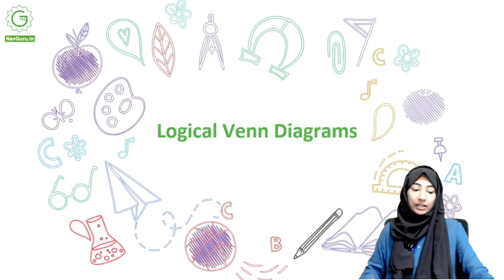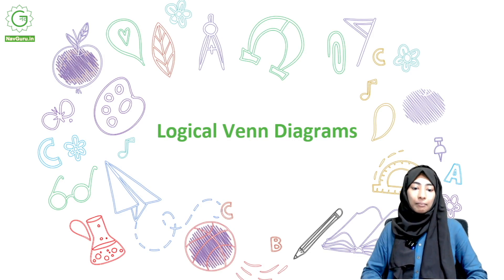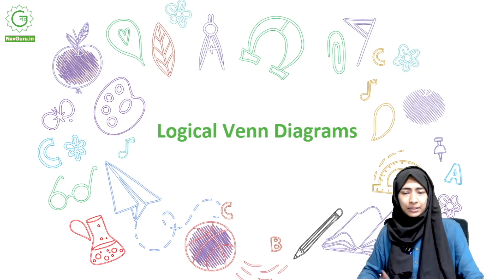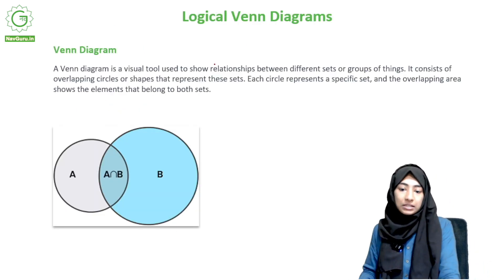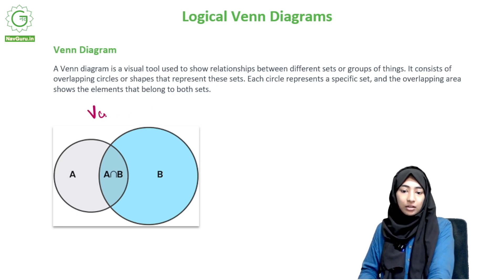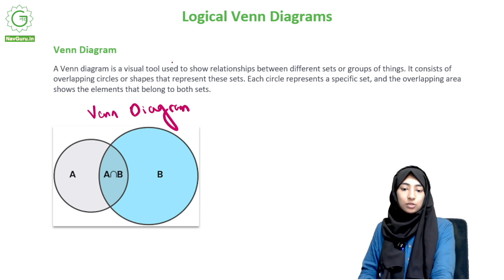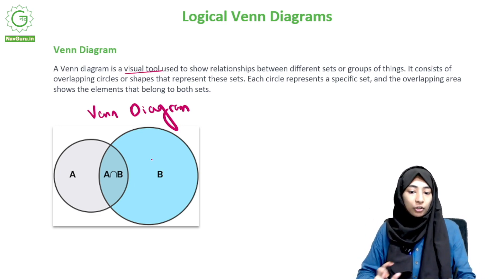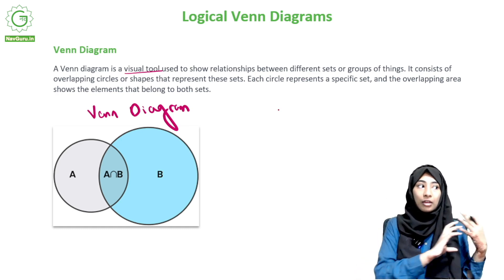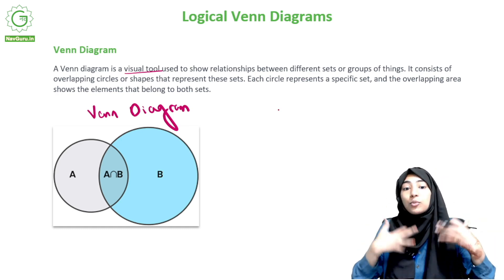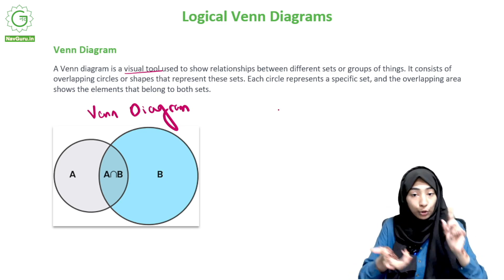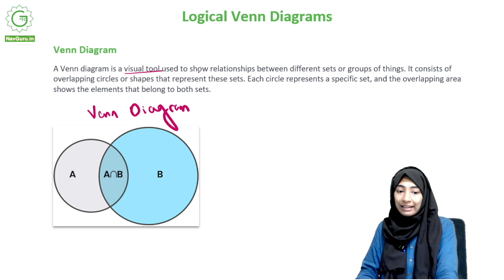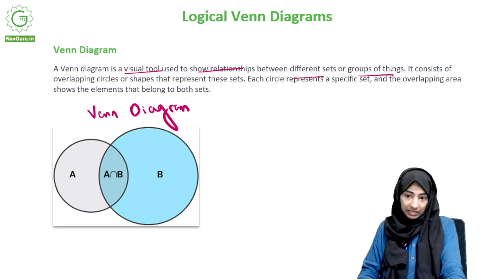Today we'll be starting with logical Venn diagrams. This figure is an example of a Venn diagram. A Venn diagram is a visual tool - it's not about writing things, it's about showing them in a figurative format. You use this visual tool to show relationships between different sets or groups of things.